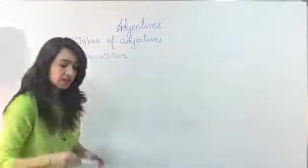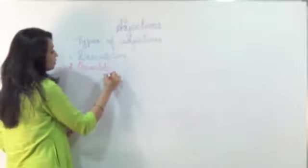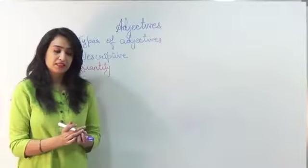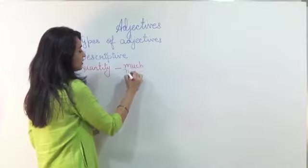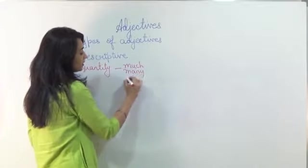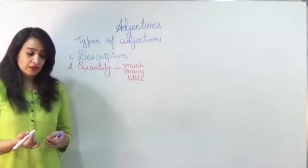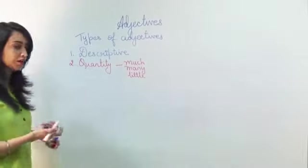The other one is quantity. So we can actually describe something by describing is it much, is it many, is it little, is it the most. So we can describe the quantity also.